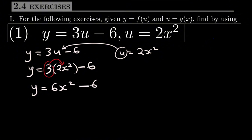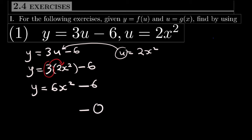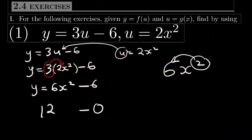Now to find the derivative, because we have minus here, we will find the derivative for each one individually. The derivative of 6, because it is a number, is 0. And the derivative of 6x squared — this is the power rule — you take 2 and multiply it by 6 to get 12, then subtract 1 from the power to get x power 1. So the derivative is 12x.